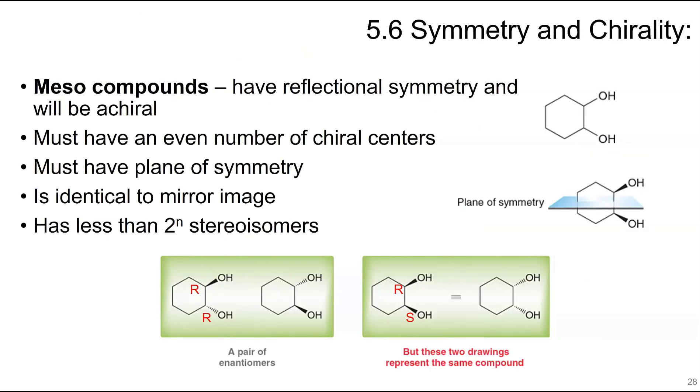Meso compounds have that reflectional symmetry, and those will be achiral. If you draw this here, there's a mirror plane within this molecule. The compound that's meso has to have an even number of chiral centers, and it has to have that plane of symmetry. It also has to be identical to the mirror image of itself. This is an enantiomer pair. Neither of these are meso because there's no plane of symmetry between them. But these two have the mirror plane. If you do the stereochemistry here, this is S and this one is R, which, if we flip it over, is the same thing. So these are the same compound.